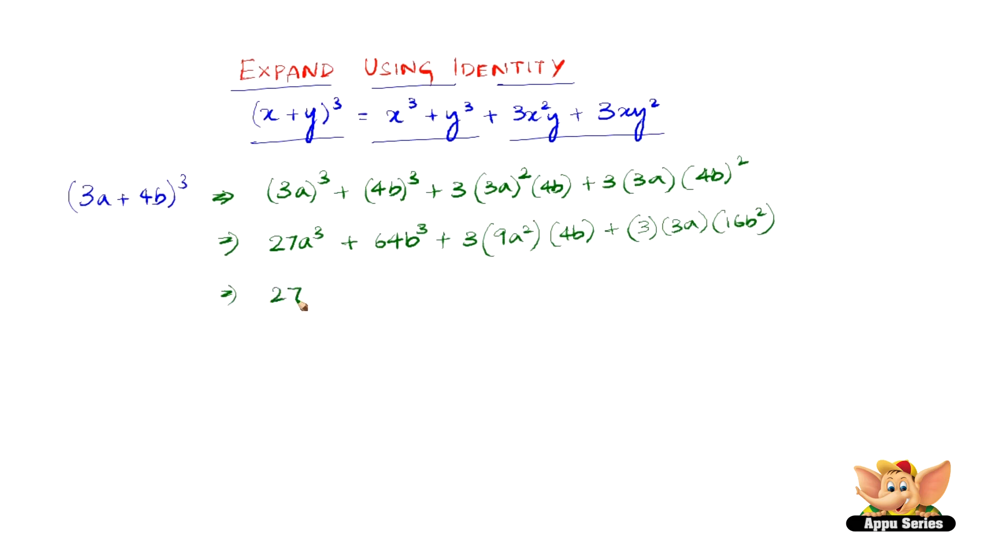Further multiplying we have 27a cube plus 64b cube plus 3 into 9 is 27 and 27 into 4, so we have 108a square into b, plus 3 into 3a is 9a and 9a into 16 is 144a, so 144ab square.